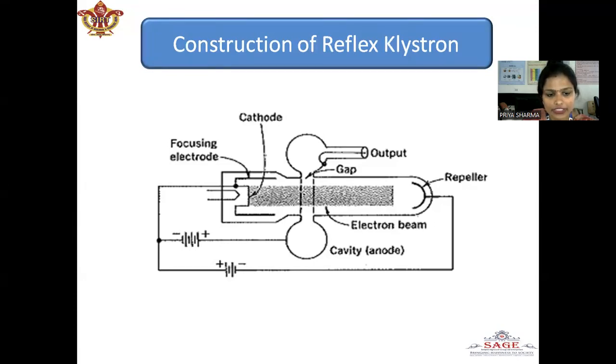The later electron denoted by EL that passes through the gap later than reference electron ER experiences a maximum negative voltage and moves with a retarding velocity. The return time is shorter as the penetration into the repeller space is less and catches up with the early electron and the reference electrons forming a bunch.